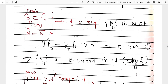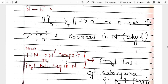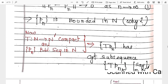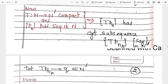Now this implies {p_n} is a bounded sequence, so {p_{n_k}} is also a bounded sequence. Also, we know that T(p_{n_k}) is convergent to Q. Now my purpose is to prove that T-bar(p_{n_k}^hat) is also convergent to Q. So T-bar(p_{n_k}^hat) minus Q can be written using the triangle inequality: it is less than or equal to the first part plus the second part.